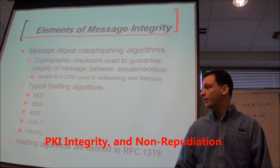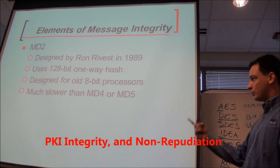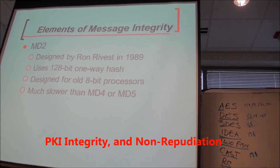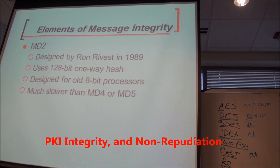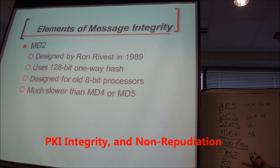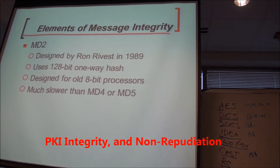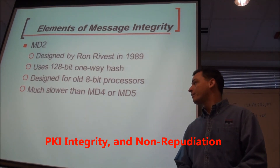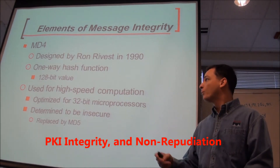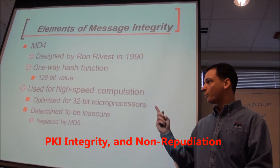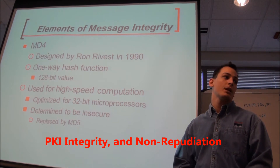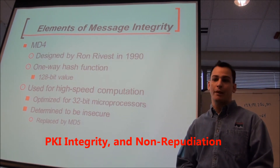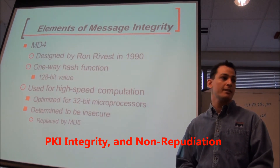MD2 — most of these popular hashing algorithms were from Ron Rivest — uses a 128-bit one-way hash and was specifically designed for 8-bit processors. Not many 8-bit processors around anymore, so it's much slower than MD4 or MD5. MD4 is the same guy, Ron Rivest — 128-bit value for 32-bit processors.